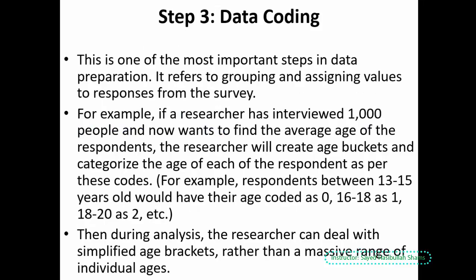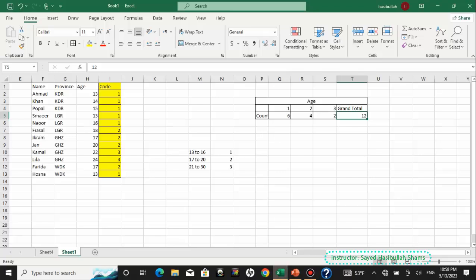After completing data editing, we jump to step 3: data coding. Once we have finished data editing and validation, we will have data coding. Suppose we have 1,000 people in different age categories and we would like to analyze the data — we must find how many respondents fall, for example, between ages 13 to 15, 16 to 18, or 18 to 20.